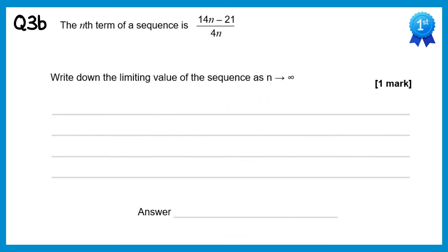Now we need to find the limit of the sequence. If we lose the negative 21, we end up with 14n over 4n. Cancel the n's and we get 14 over 4, which is 3.5.